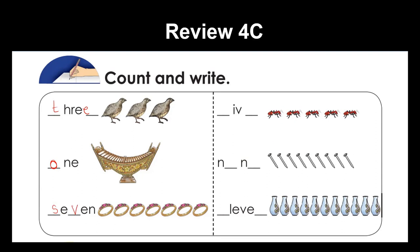How many ants are there? One, two, three, four, five — five ants. F-I-V-E, 5. How many nails are there? One, two, three, four, five, six, seven, eight, nine — we write N-I-N-E, nine nails.